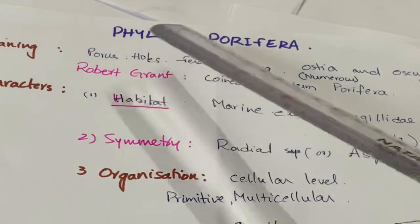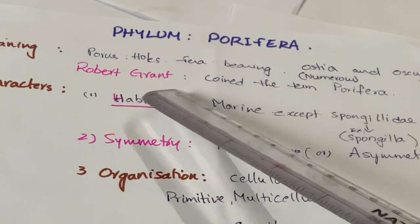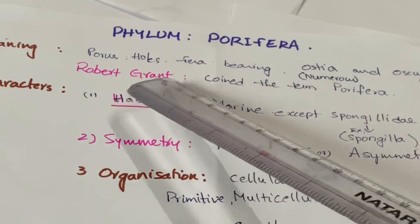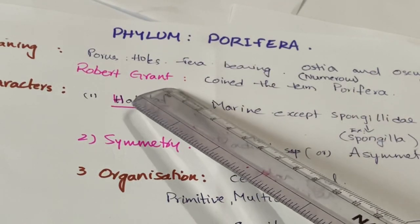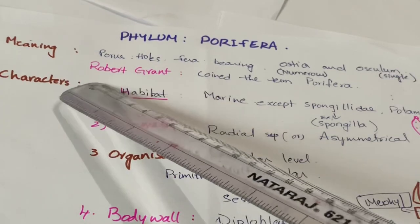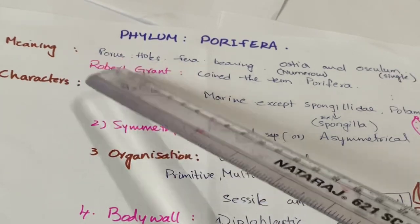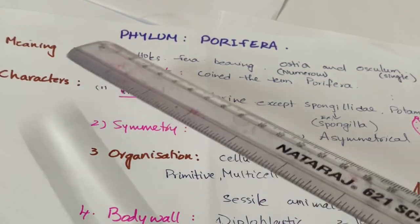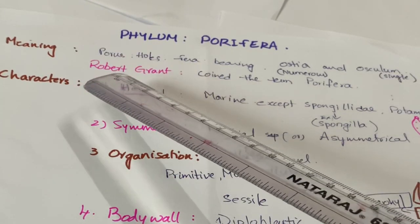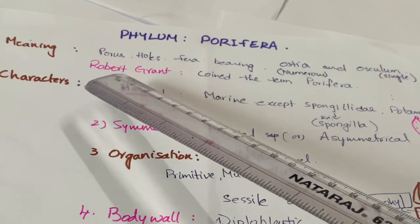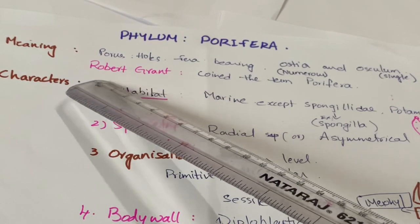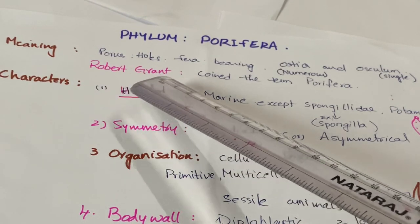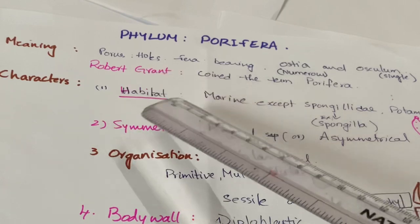The term Porifera was coined by Robert Grant. From an examination point of view, Robert Grant is very important. If asked who coined the term Porifera, you have to answer: Robert Grant coined the term Porifera.